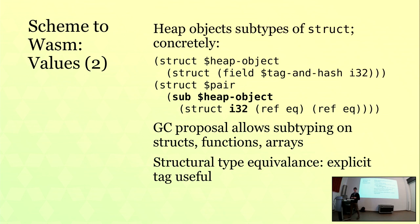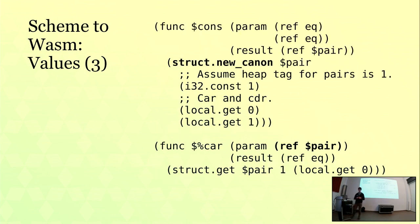We'll use one i32 field that every object on the heap has, containing the hash code and the type tag. So a pair will be a subtype of heap object with the first i32 field — that tag-and-hash field — plus two other fields for our car and cdr. This shows defining specific struct types and subtyping; you can also subtype functions and arrays. Our cons function takes two ref eq arguments and creates a new struct that the system manages — it's wonderful. To access the first field, we use struct.get, and when compiled on V8, it's quite efficient — even more efficient than compiled JavaScript.